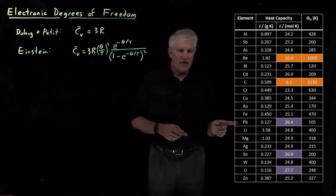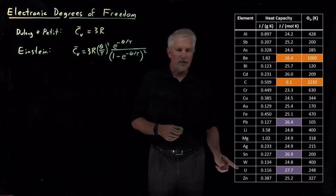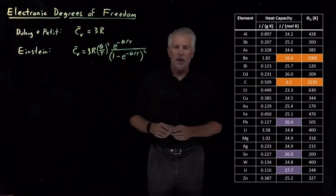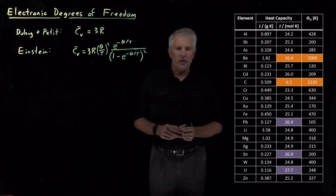So we see lead, for example, 26.4, tin at 26.9, uranium at 27.7. Those are all larger than the Equipartition Theorem prediction of 24.9.